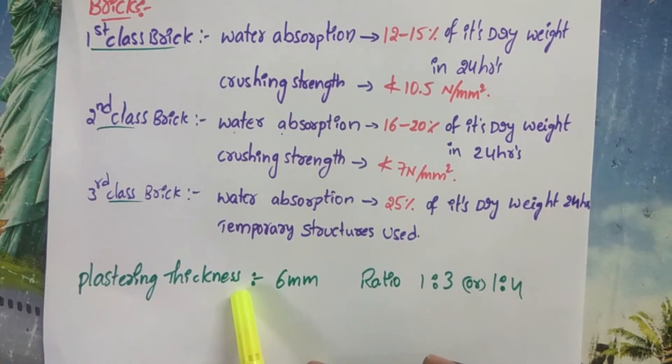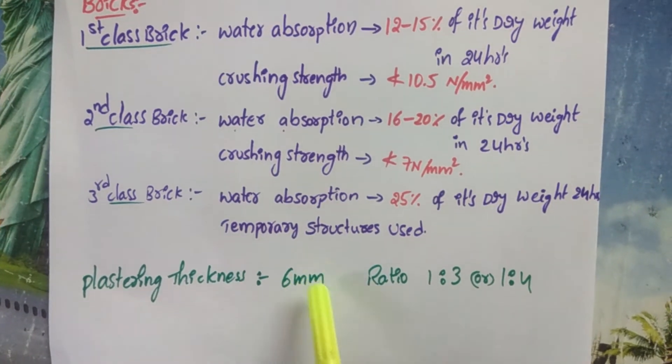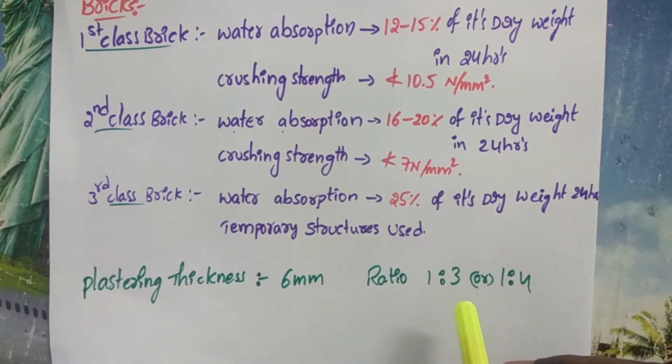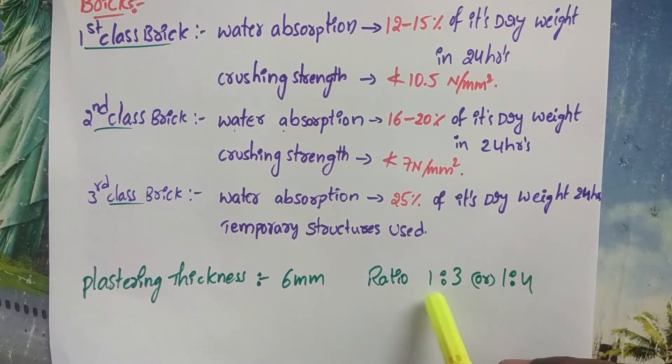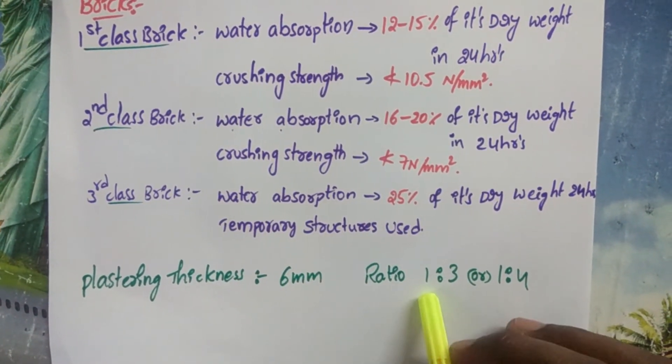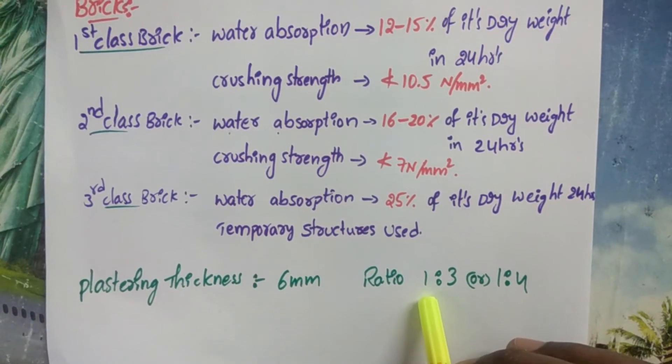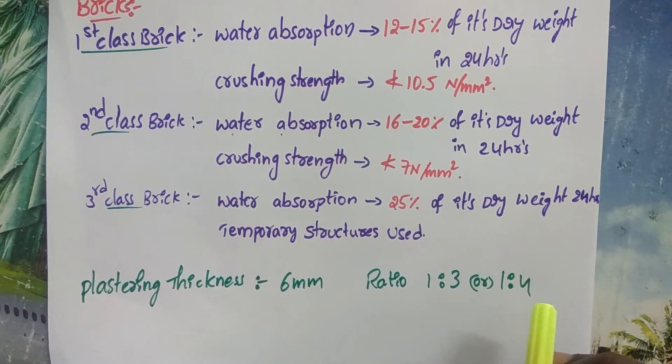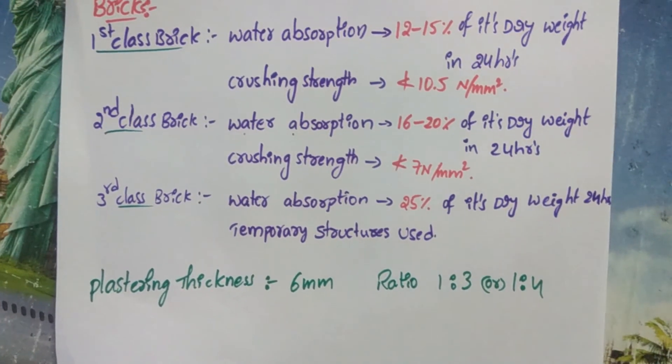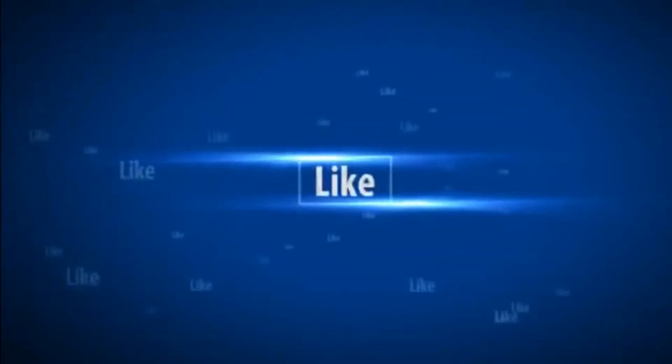Plastering thickness is 6 mm, and the ratio of plaster mix is 1:3 or 1:4.